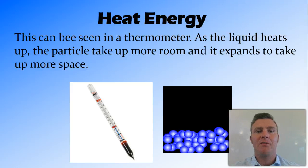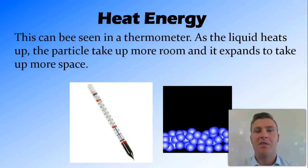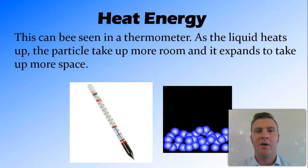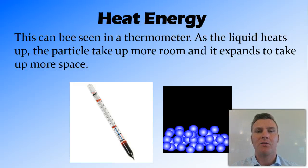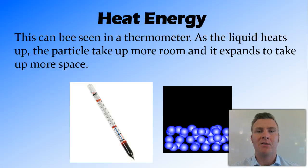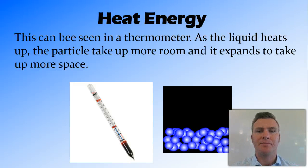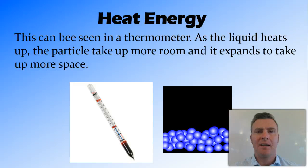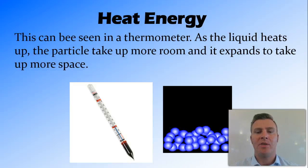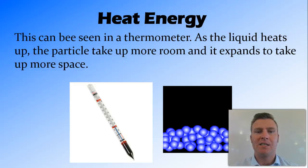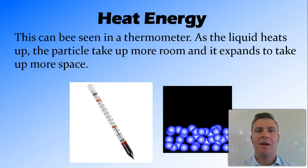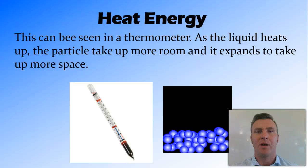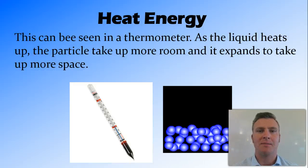An example of this is in a thermometer. A thermometer has a liquid in it, so the particles are moving quite fast and reasonably freely. And as you heat the liquid and it gains more energy, those particles move faster and faster and expand and take up more space. And this is why the liquid moves up the glass tube, because it's taking up more space.